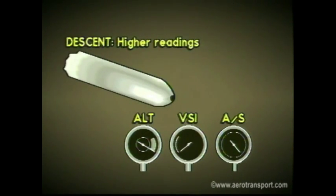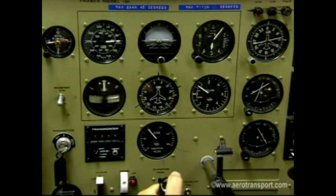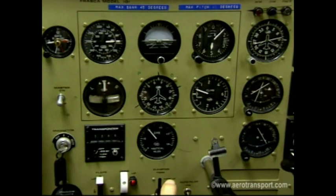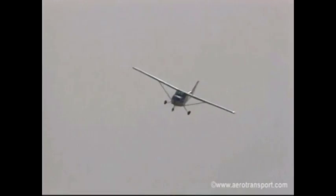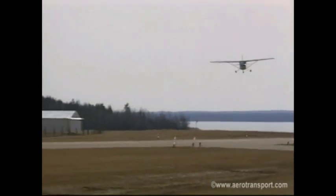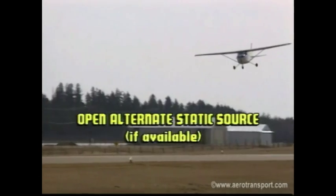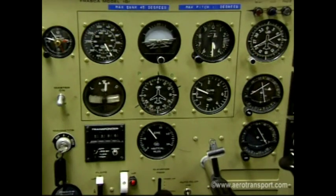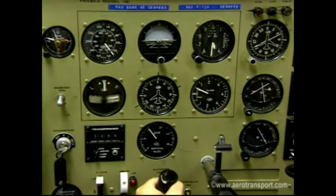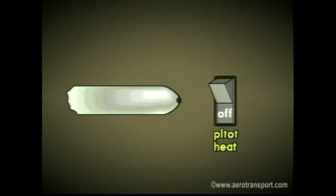In descent, the readings are exaggerated. This problem can be spotted while in flight if you notice the reading slowly catching up when you resume straight and level flight following a climb. If you ever suspect blockage of the static system while in flight, open the alternate static source found on most aircraft. If you notice a significant change in the position of the needles, there is static pressure blockage. Always make sure the pitot heat is on when icing is suspected.